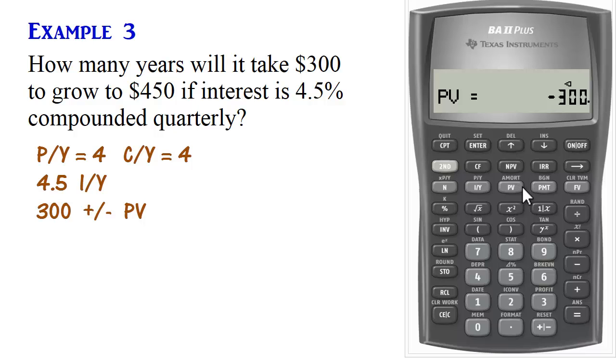And there is no payment. So if you didn't clear time value of money, make sure you do 0 payment. Future value is 450. We input that as positive 450, future value.